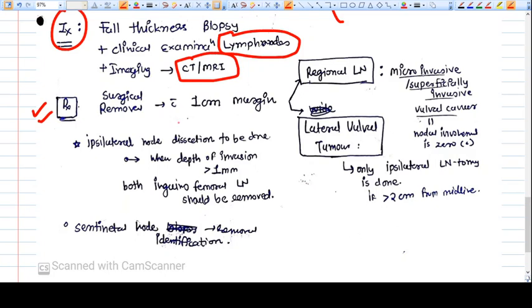Now let's come to the treatment. How you treat that particular vulval cancer? The treatment is surgical. Surgical treatment is the mainstay of treatment: surgical removal with at least one centimeter of margin with disease-free margin. You just remove that lesion with having a one centimeter of disease-free margin.